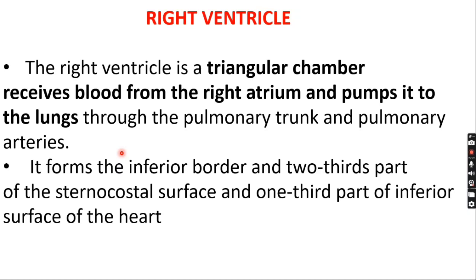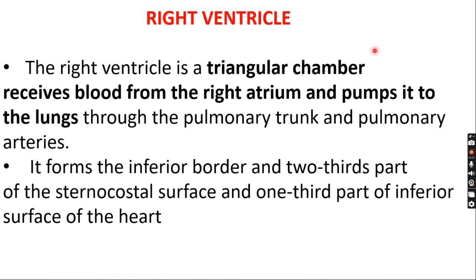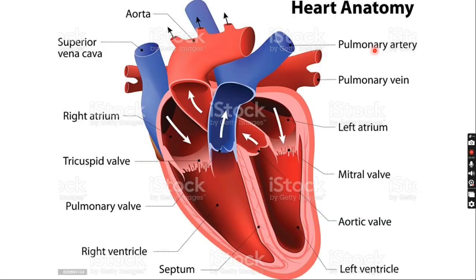Moving on to the topic: the right ventricle. The right ventricle is a triangular chamber. It receives blood from the right atrium and pumps it into the lungs through the pulmonary trunk and arteries. It forms the inferior border, two-thirds of the sternocostal surface, and one-third of the inferior surface of the heart.